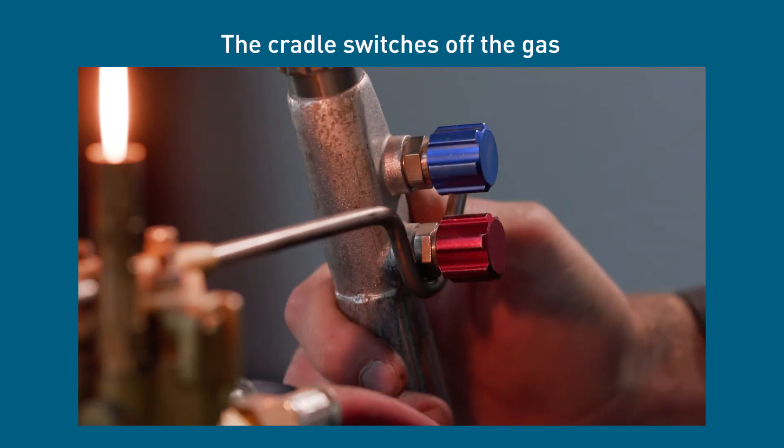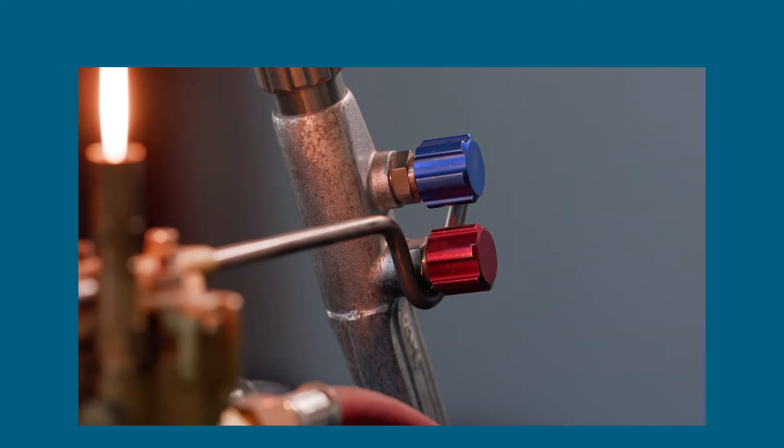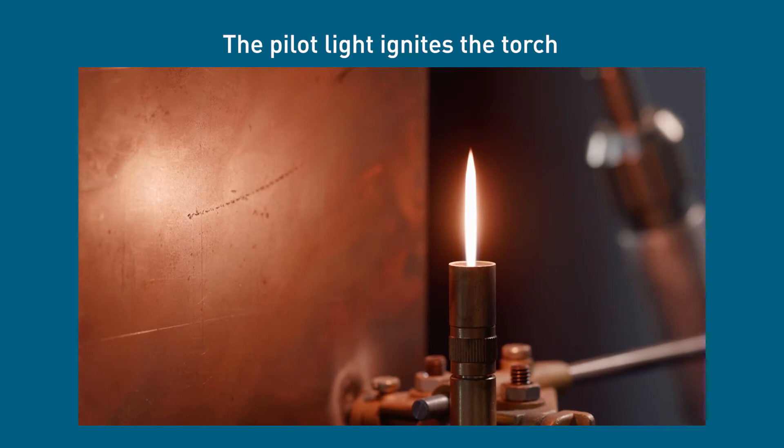The torch rests on a cradle that turns off the gas supply when not in use and it's lit with a pilot light.